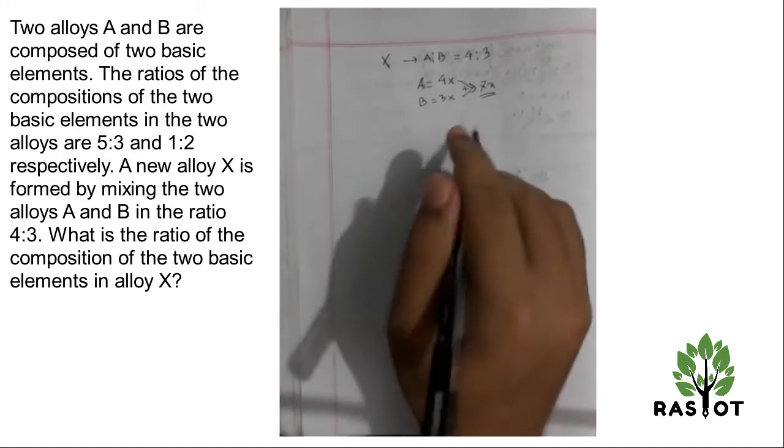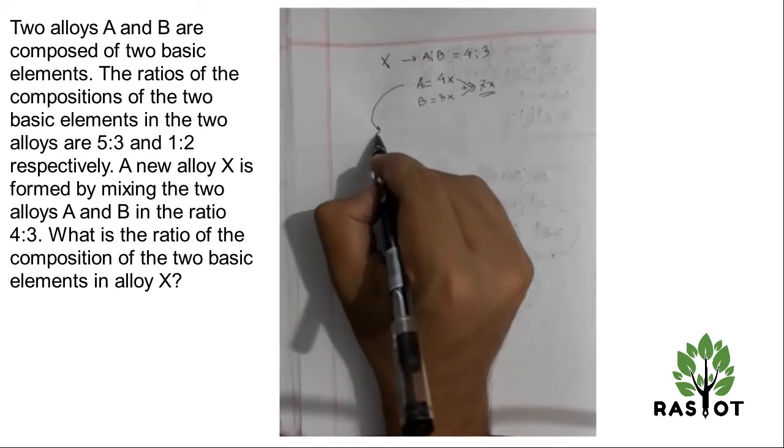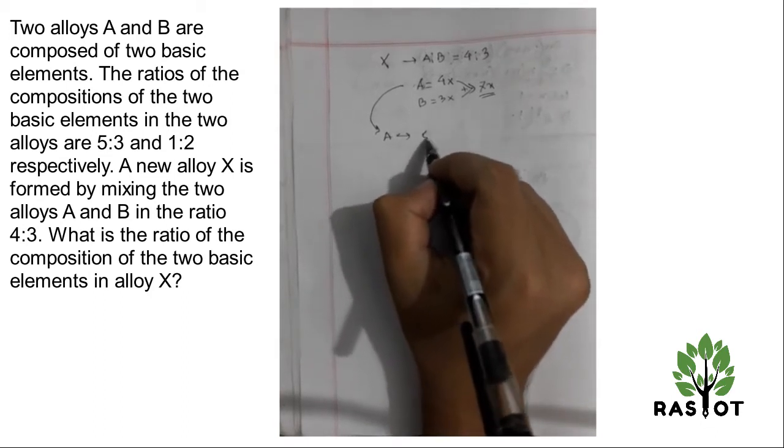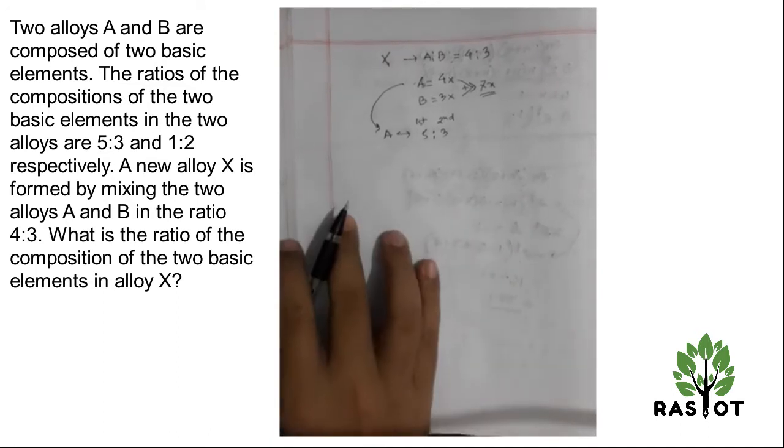Okay fine. So this element has two elements, a mixture of 4X. The ratio is 5 is to 3 - the first element and the second element.